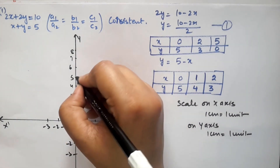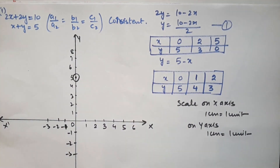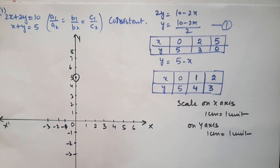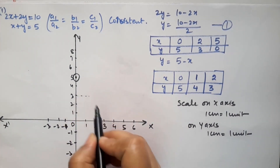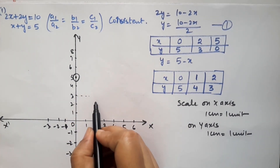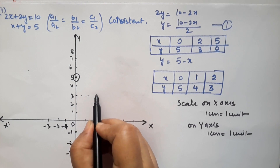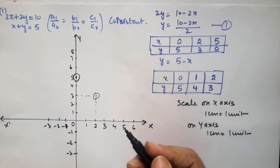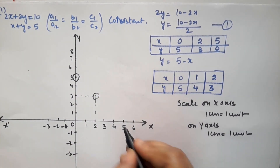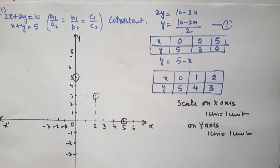The first point is (0, 5), the second point is (2, 3), and the third point is (5, 0). We plot these and draw the first line.